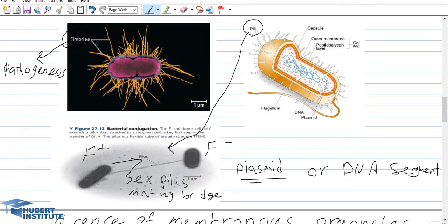The bacterial cell that contains the plasmid is called F-positive and the other is called F-negative. They are able to exchange a plasmid or part of DNA from F-positive to F-negative through the sex pili, and this process is called conjugation.